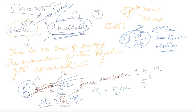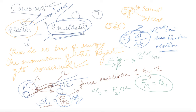Now, f12 is actually equal to minus f21. This is because of Newton's third law. If I apply a force f on a wall, by Newton's third law the wall also applies a force equal in magnitude but opposite in direction. So f12 equals minus f21 — the forces are opposite in nature.